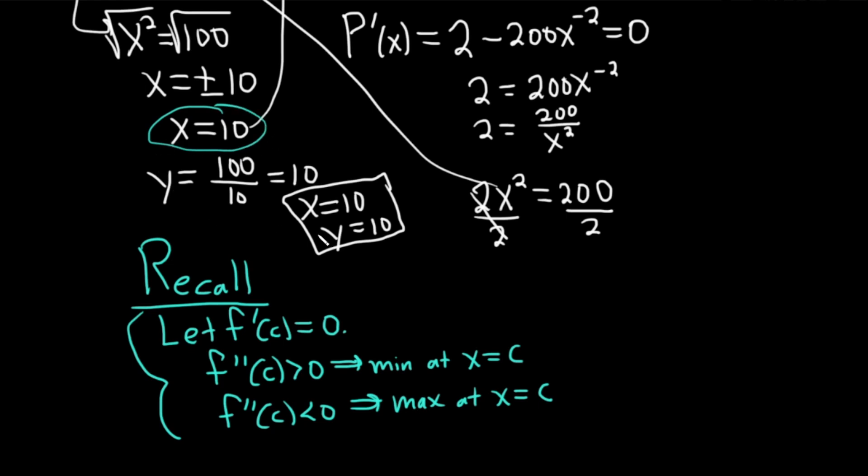I went ahead and got both answers. But you're still supposed to check that it's actually a minimum. So let's go ahead and do it. But all we have to do to verify it's a minimum is basically find the second derivative and plug in 10.